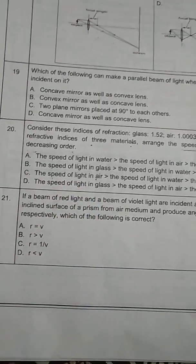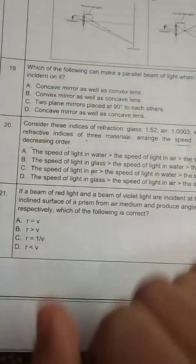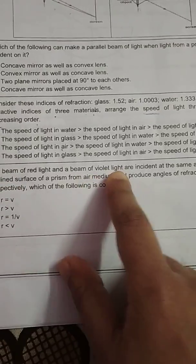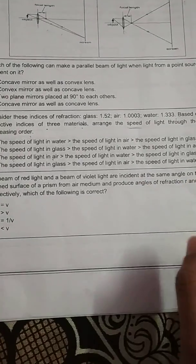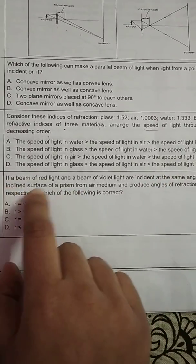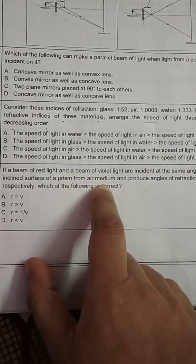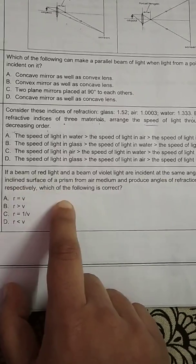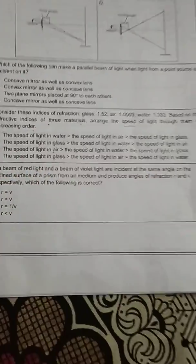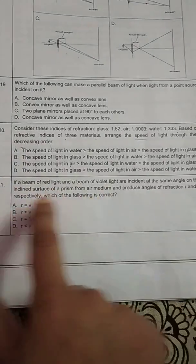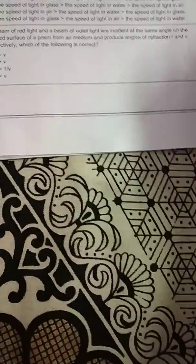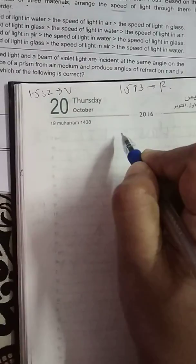Let's, this is question number, I think fifth, according to my series. And this question is, if a beam of red light and a beam of violet light are incident at same angle on the inclined surface of a prism from air medium and produce angles of refraction R and V respectively, which one of the following is correct? Okay, so this is the question from sample paper, class 10th, CBSE board. Students, I want to tell you first, let's just draw the figure for it.